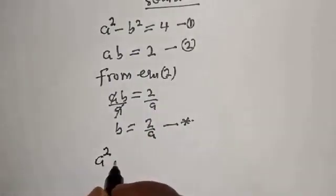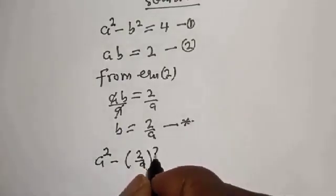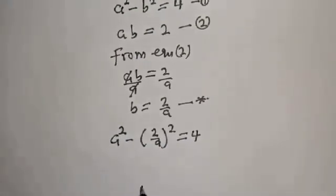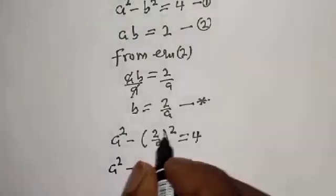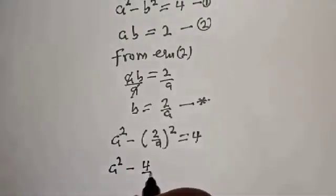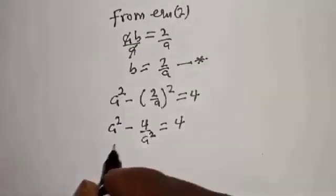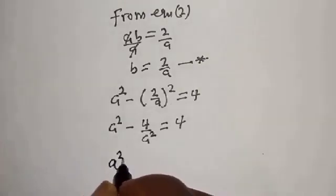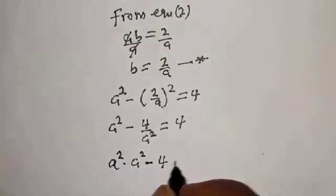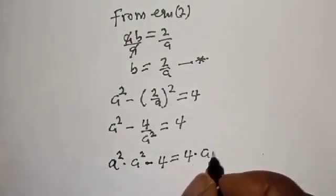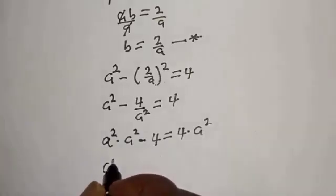Now substitute for b in equation 1: a squared minus (2/a) squared equals 4. This becomes a squared minus 4 over a squared equals 4. Multiplying all through by a squared gives a squared times a squared minus 4 equals 4a squared.